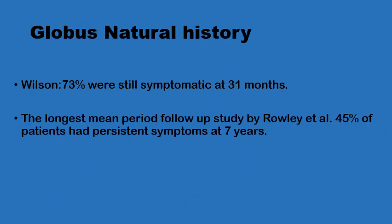Regarding the natural history of globus pharyngeus: is it self-limiting, does it recur? If patients are followed up for periods of 30 months or more, 73% were found to be still symptomatic. If followed up for longer periods up to seven years, approximately half of the patients would still have symptoms at seven years, while the other half would have had their symptoms clear.